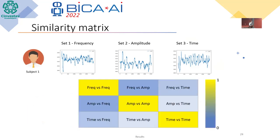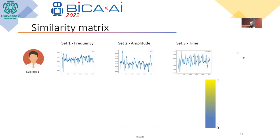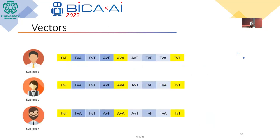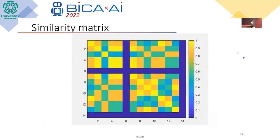To compare this data, we used a similarity matrix. The first step is comparing, for subject 1, frequency versus frequency, frequency versus amplitude, frequency versus time, amplitude versus frequency, and so on. Yellow means the signals are the same or very similar, and zero means totally different. We then convert that matrix into a vector and do the same for all subjects, obtaining a final similarity matrix.